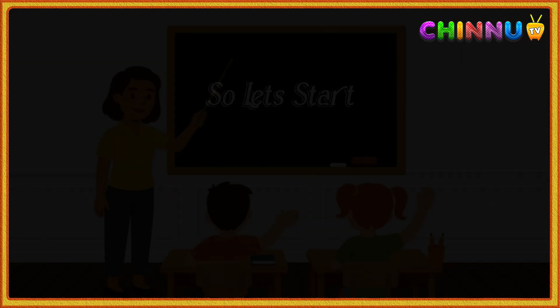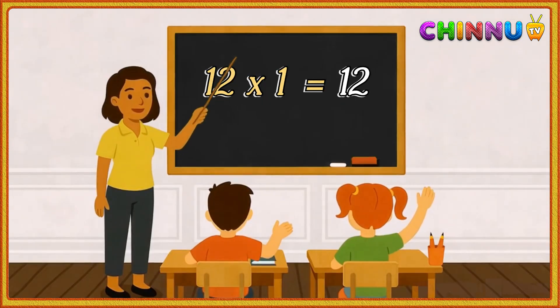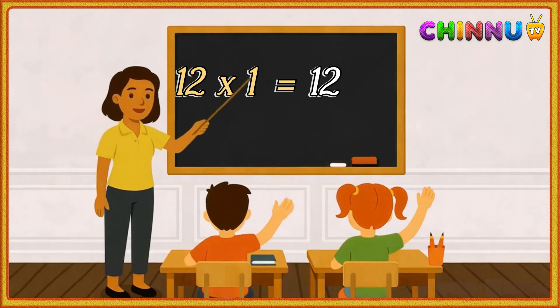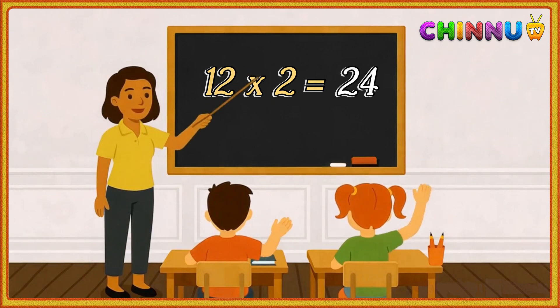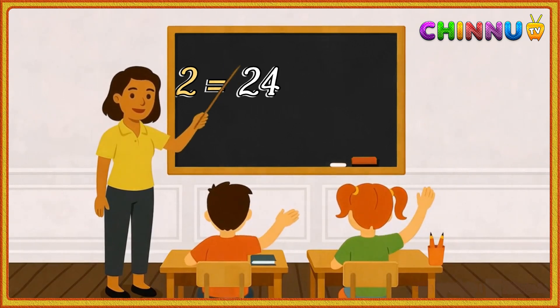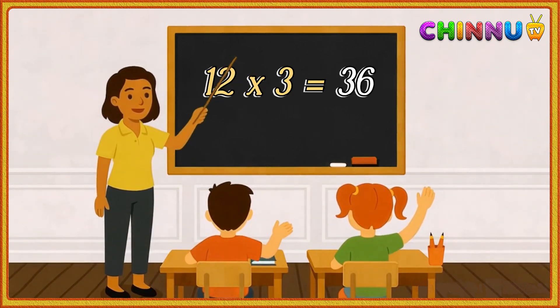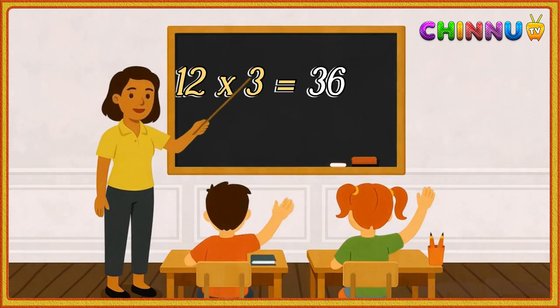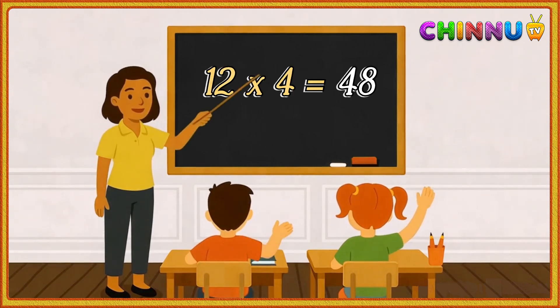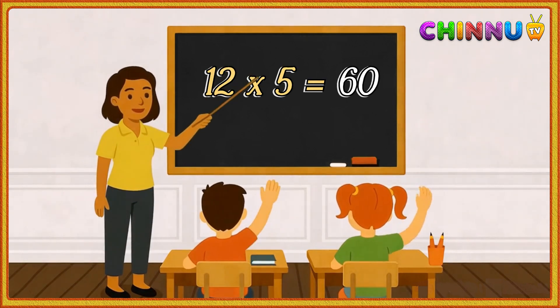So let's start. 12 1s are 12, 12 2s are 24, 12 3s are 36, 12 4s are 48, 12 5s are 60.